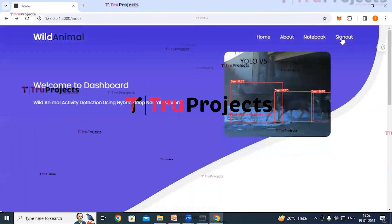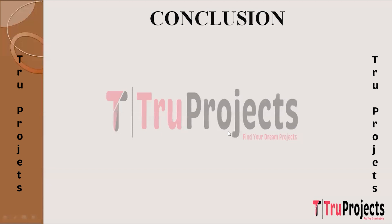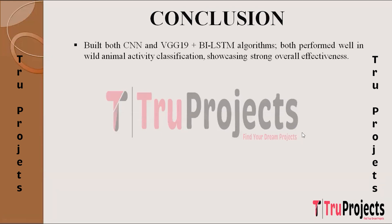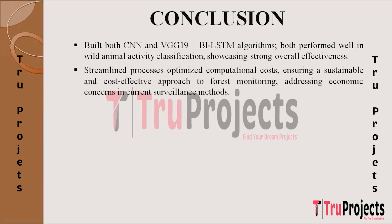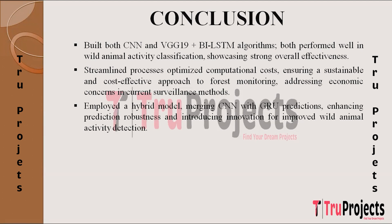Click back and then sign out. In conclusion, we have successfully implemented both CNN and the combination of VGG-19 and BiLSTM algorithms for wild animal activity classification, demonstrating robust performance and effectiveness in capturing diverse features within the dataset. We have efficiently streamlined processes to optimize computational costs, ensuring a sustainable and economical approach to forest monitoring, addressing economic concerns associated with conventional surveillance methods. We have also innovatively applied a hybrid model by merging CNN with GRU predictions, elevating prediction robustness and introducing advancements in wild animal activity detection, contributing to improved model performance and adaptability.